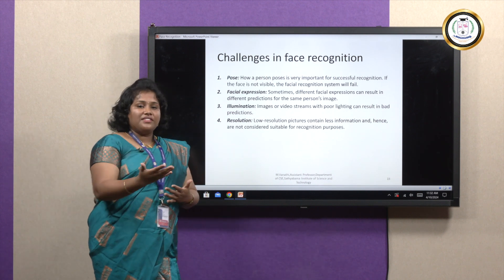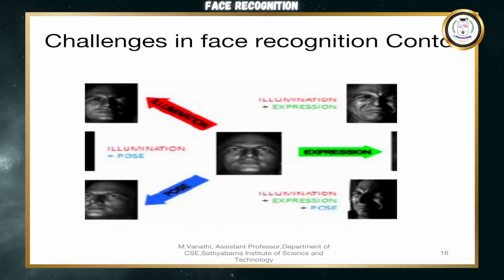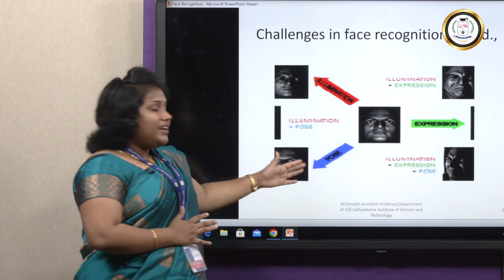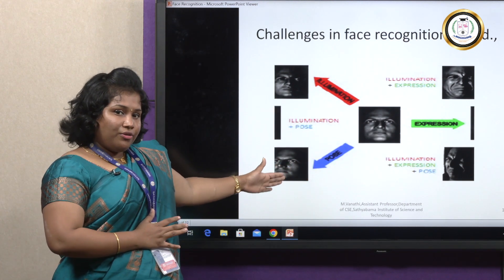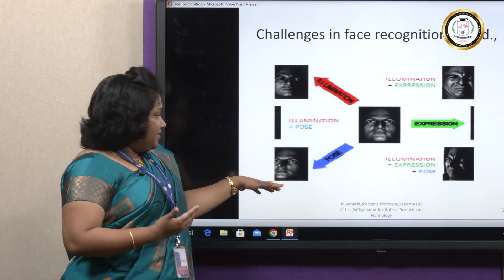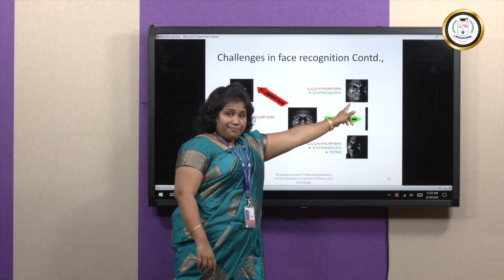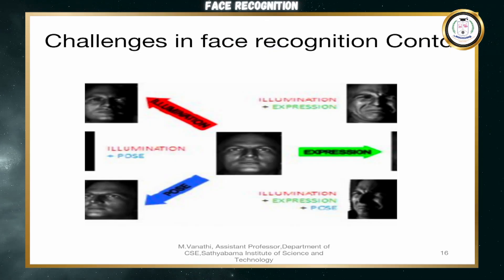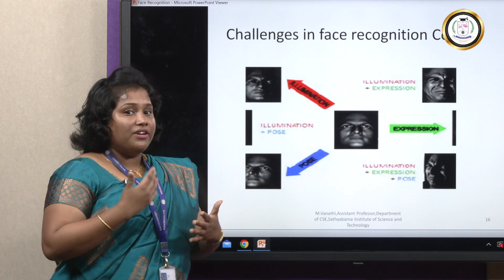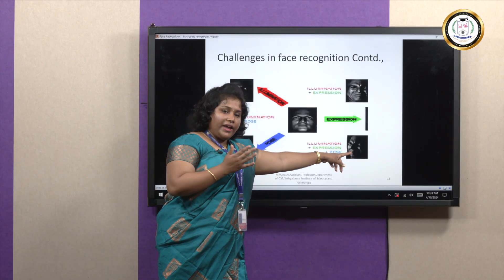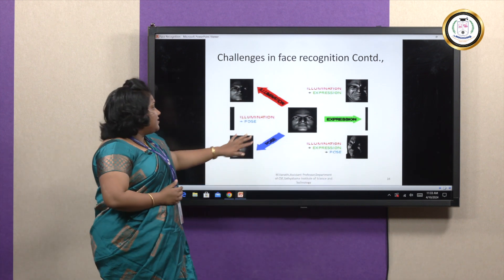We have many more challenges to identify facial features. You can see this illumination image — it is very dark lighting. Next is a pose example — you can see this is a right-side pose, which is very complex to detect. Extracting the face from the left side is also very difficult. Next is illumination plus expression: you can see this person is crying, so we cannot identify the crying person because the facial features are different when crying, sad, or angry. This image combines illumination, expression, and pose challenges together.